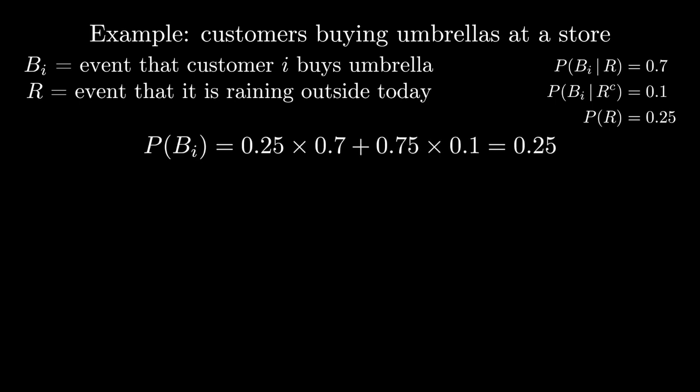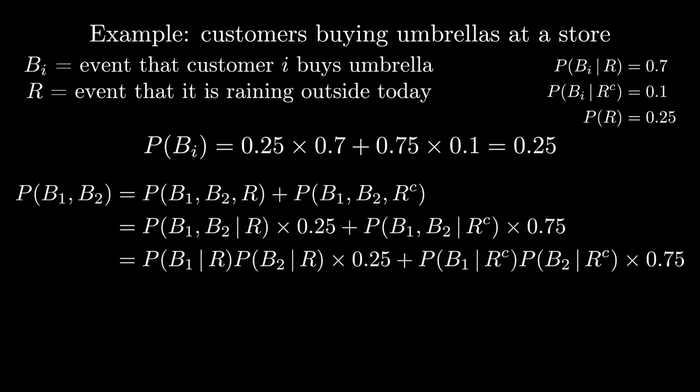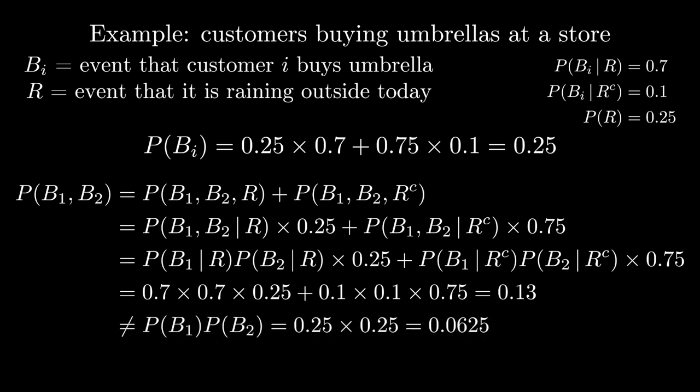From this, we can compute the marginal probability of any given customer buying an umbrella. Now let's look at the joint distribution of whether or not any two customers buy an umbrella. We need to marginalize over whether or not it's raining. When we work this all out, we see that the probability of two customers both buying an umbrella is larger than the product of the marginal probabilities. So here B1 and B2 are not independent, but they are conditionally independent given the knowledge of whether or not it's raining.